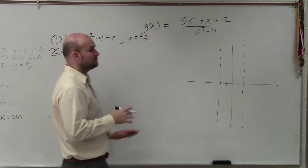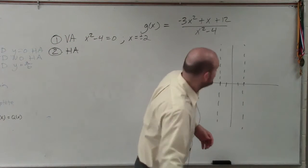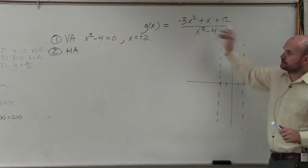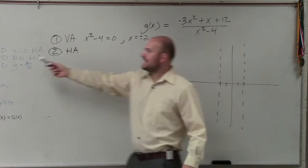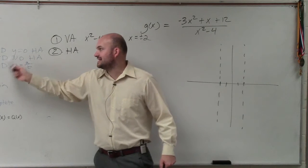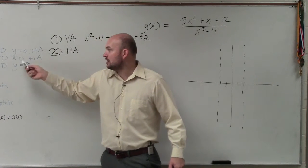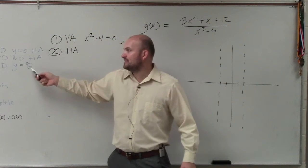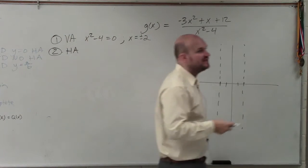Horizontal asymptotes, basically we're looking at the degrees of each of them. So degree in our numerator over degree in our denominator. And what I state is when the degree in the numerator is equal to the degree in the denominator, y equals a over b, where a and b are the leading coefficients.